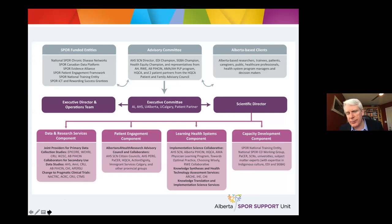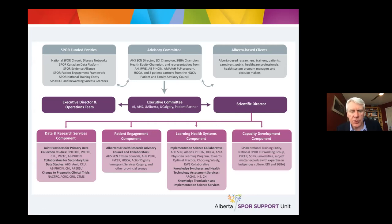The governance structure includes the VPs of research from the University of Alberta, University of Calgary, Alberta Health Services, and Alberta Innovates on the executive committee, along with a patient partner. They provide oversight to ensure we're supporting research from investigators in Alberta, addressing patient-relevant questions, and addressing priorities for the healthcare system and patients.